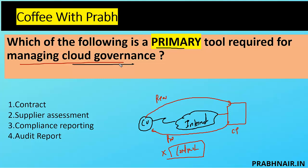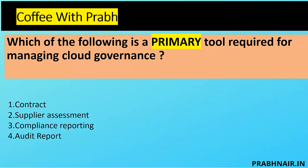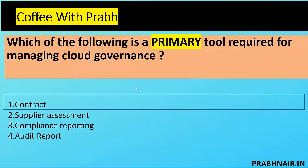Supplier assessment is something you do before and after onboarding, but after consuming the cloud service, if it's not in the contract you can't enforce it. Compliance reporting is also an important tool but not the primary tool. An audit report gives visibility about cloud governance, but until it is in the contract, we cannot manage that. The contract plays a very important role in managing the relationship between customer and cloud provider. That's why the answer is 'contract.'